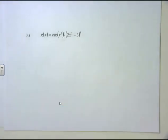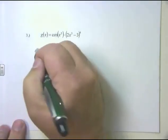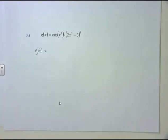Next example: g(x) = cos(x³) times (2x³ - 3)⁴. What's the big picture? With that multiplication in the middle, this is another product rule problem. The big picture is the product rule: derivative of the first times the second, plus the first times the derivative of the second. But these are more advanced problems.